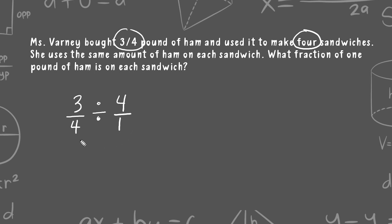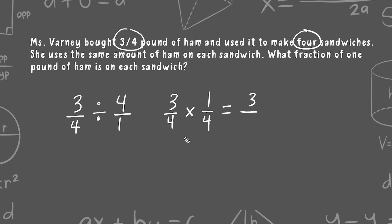Whenever you are dividing two fractions, you always rewrite the first fraction exactly as is, change the division sign into multiplication, and write the reciprocal of the second number. So we're going to take four over one and change that to one over four. Then we multiply straight across: the product of our numerators is three, and the product of our denominators is sixteen. So each sandwich needs three-sixteenths of a pound of ham.